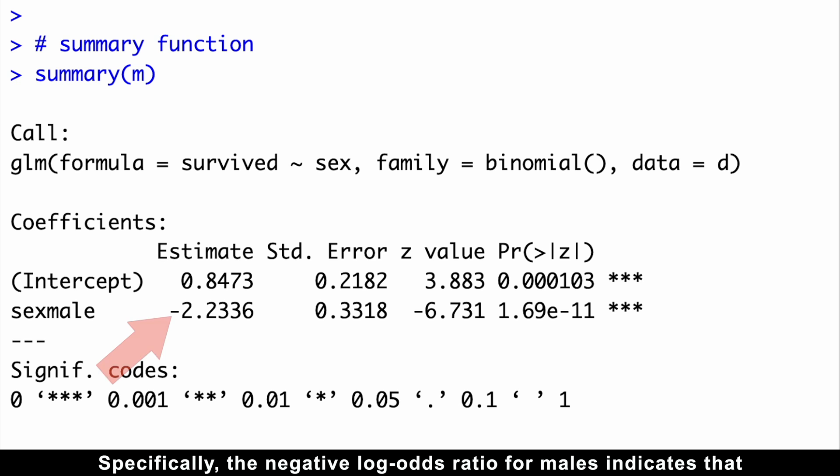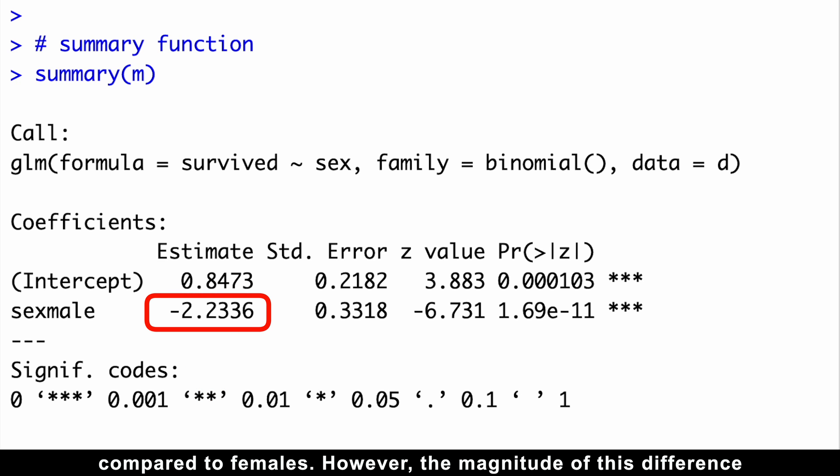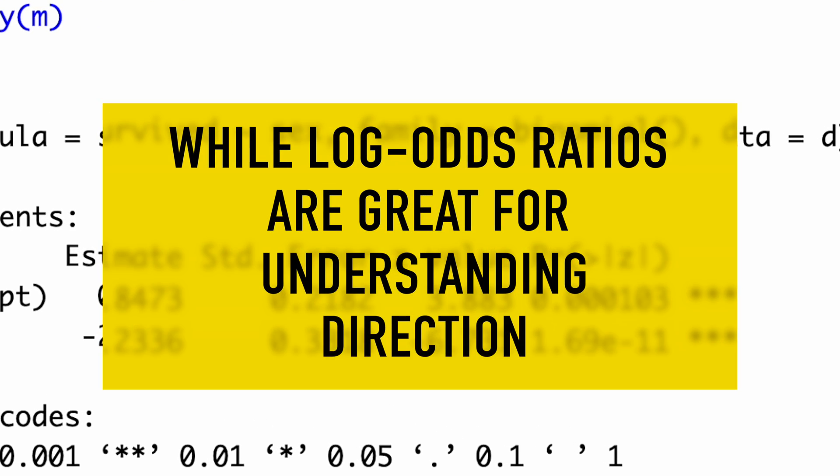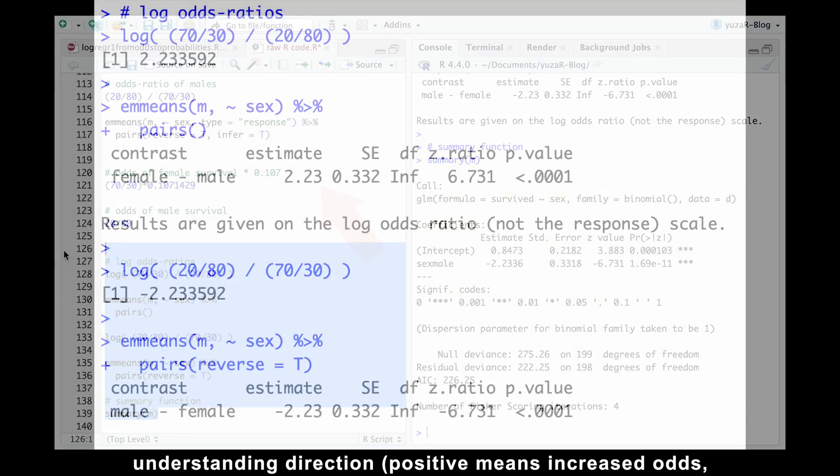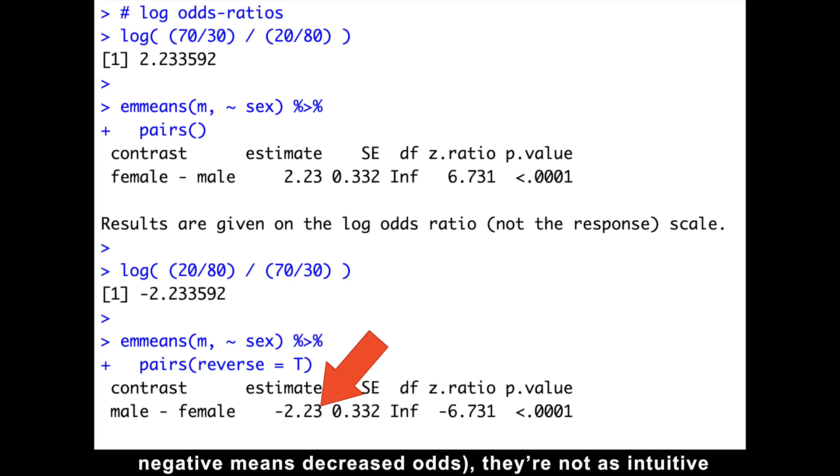Specifically, the negative log odds ratio for males indicates that male passengers have a significantly lower chance of survival compared to females. However, the magnitude of this difference isn't immediately apparent from the minus 2.23 log odds ratio alone. And here is the catch: while log odds ratios are great for understanding direction—positive means increasing odds, negative means decreasing odds—they are not as intuitive when it comes to quantifying the exact difference.